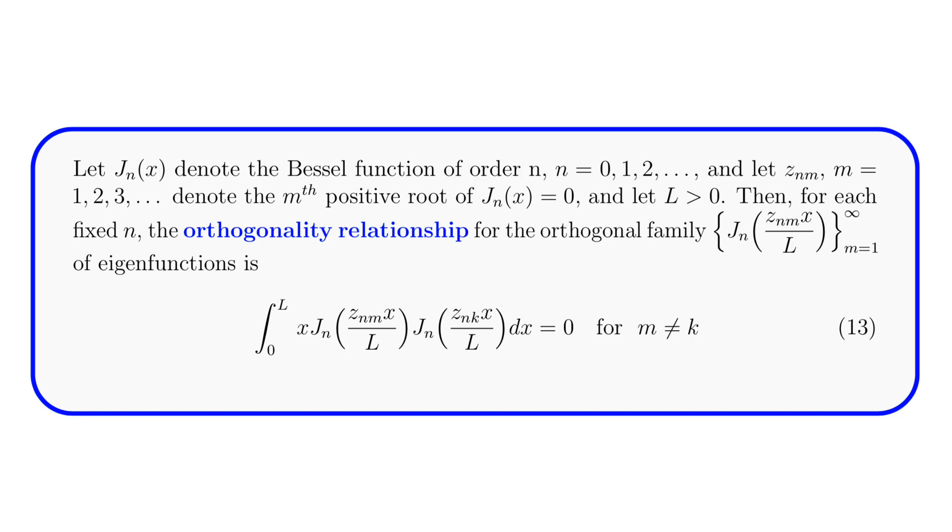Finally, we need to discuss the orthogonality relationship for the complete orthogonal family of eigenfunctions. Let j sub n denote the Bessel function of order n, n starting at 0. And as usual, as above, z sub nm denotes the mth positive root of j sub n. And let l be a positive number. Then for each fixed n, the orthogonality relationship for the orthogonal family given here, built out of j sub n's, is given in equation 13.